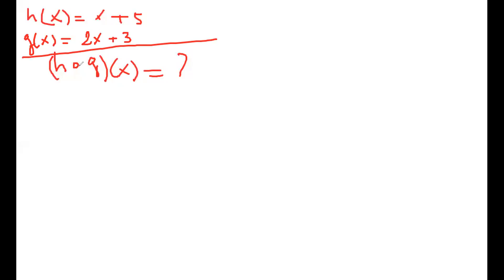We have two functions and we need to find this. This means h of g, or h composite g — that's how you read that notation. What this means is simply we plug g into h. I'm going to take the function g and plug it into h.